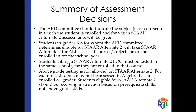We do have some campuses like IB campuses where every eighth grader, for example, takes algebra one. But if you are a student with a significant cognitive deficit, you would never have an above grade level test. So if you're a STAR Alternate 2 student, you should be receiving instruction based on prerequisite skills and not above grade skills. Even though everyone else might take algebra one in the eighth grade, you would still take eighth grade STAR Alternate 2.